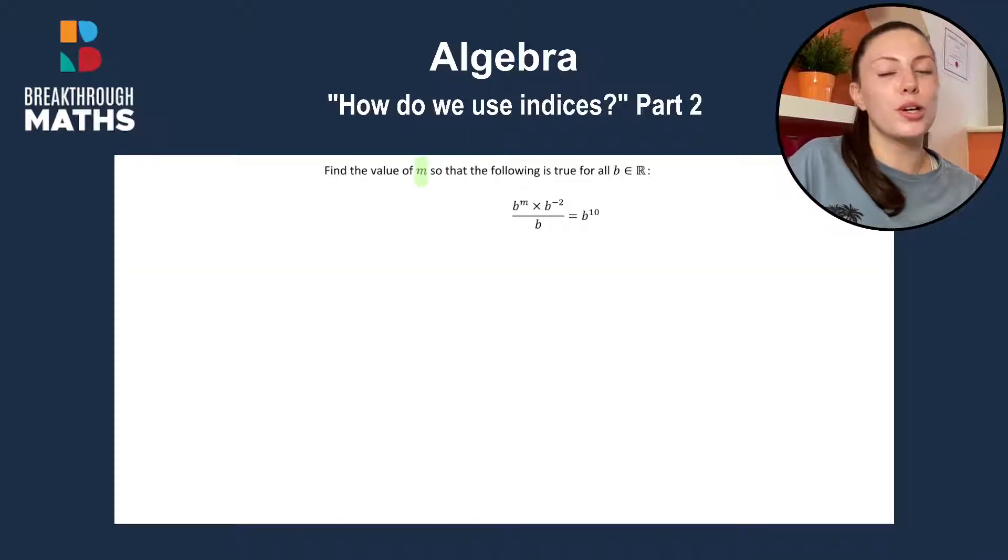So looking at our question, we're going to have to find the value of M. So our first check is always going to be to see if we've the same common base throughout the question, which we can see we do. We have a common base of B.